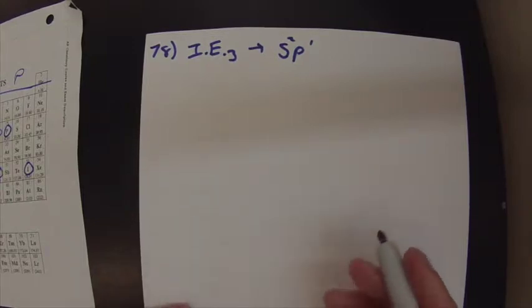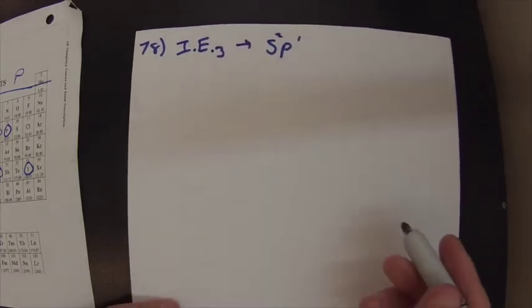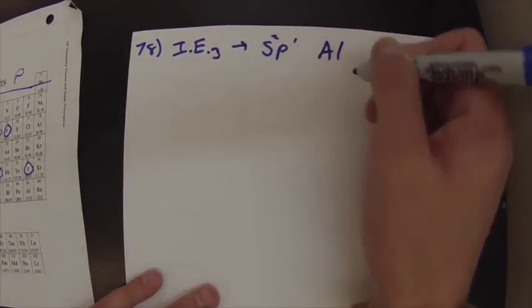It says it's in the third period. So the only thing in the third period with this electron configuration is aluminum.